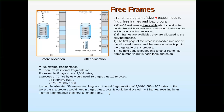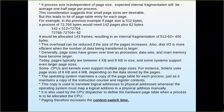In the worst case, a process would need n pages plus 1 byte, and it would be allocated n+1 frames, resulting in internal fragmentation of almost an entire frame. If a process size is independent of the page size, the expected internal fragmentation will be on average one-half page — so on average, half a page will be wasted for each process.